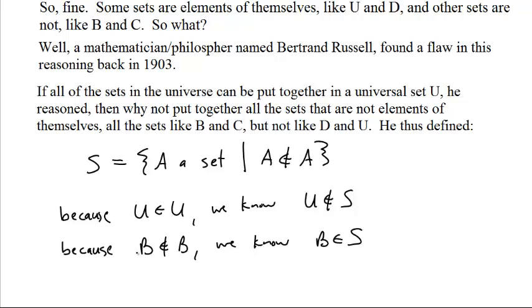Fine. B, defined earlier, the set with four elements in it, is not one of its elements. And therefore, it satisfies the one requirement. If you are not an element of yourself, you get to be in S. If you are an element of yourself, then you don't get to be in S. That's the rule.